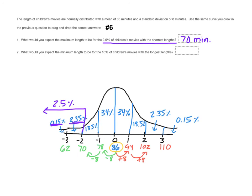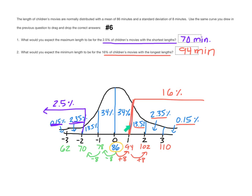Number two says: what would you expect the minimum length to be for the 16% of children's movies with the longest length? Remember that 16% comes from adding 13.5 plus 2.35 plus 0.15. So the 16% of the longest children's movies are 94 minutes or more. The minimum length would be 94 minutes — we don't know the maximum, just that it's somewhere past 110. The minimum length to be in that 16% of the longest movies is 94 minutes. I hope that helped with your 11.4b day one homework. I added another attempt, so please go back and do this assignment again.